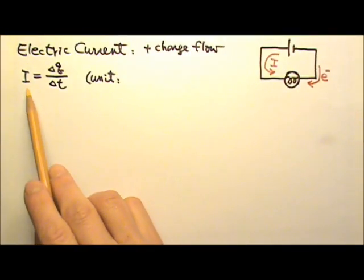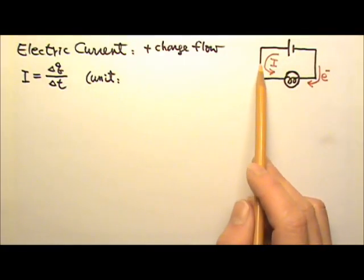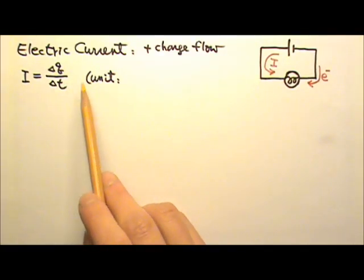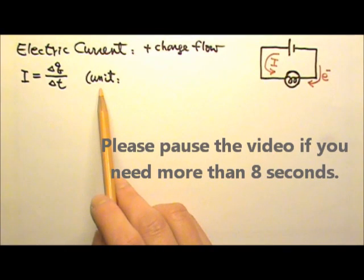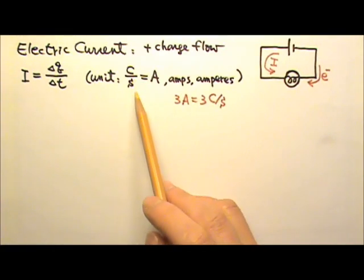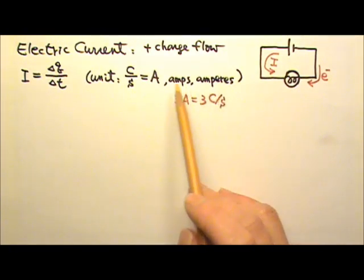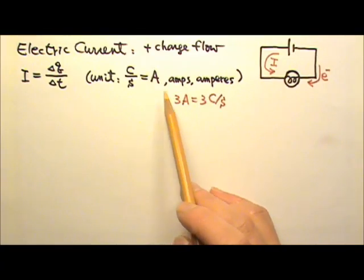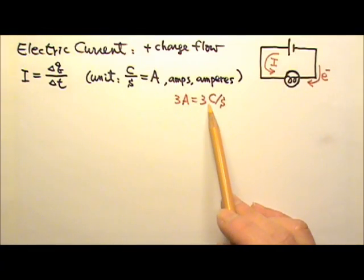The definition for electric current is the amount of charge flowing through a cross-section per unit time. So what is the unit for current? It's Coulombs per second. And we give it a special name, Amps or Amperes. We use capital A for Amps. So a 3 Amps current means 3 Coulombs of charge flows past the cross-section of a wire every second.